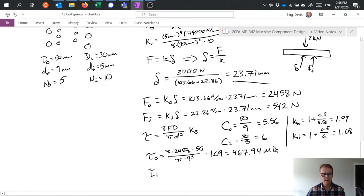And do the same thing for the inner here. And I get 8 times 542 times 30 over pi times 5 cubed times 1.08, 357.75 megapascals.